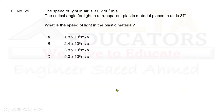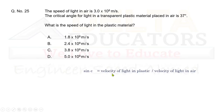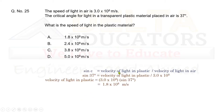Question 25: The speed of light in air is 3 × 10⁸ m/s. The critical angle for light in a transparent plastic in air is 37°. What is the speed of light in the plastic? Using sin C = v_plastic ÷ v_air: sin 37° = v_plastic ÷ (3 × 10⁸). Solving gives v_plastic = 1.8 × 10⁸ m/s, which is given in option A. Correct option is A.